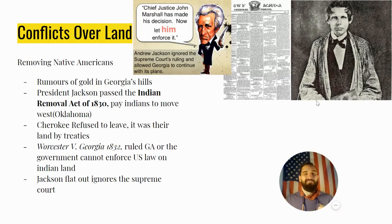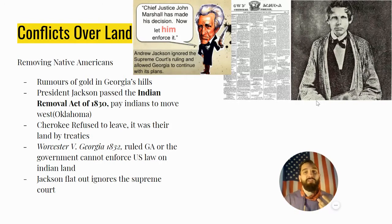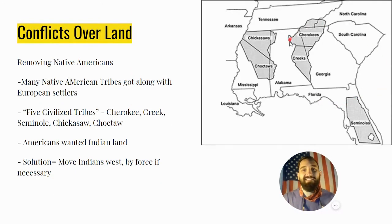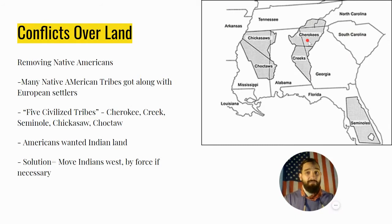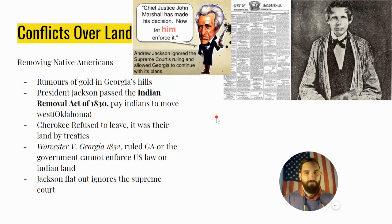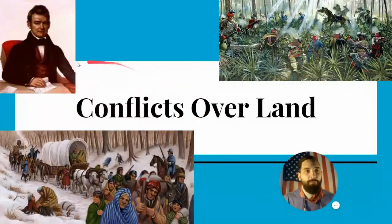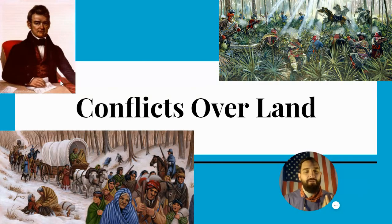The Cherokees refused to leave. Georgia was enforcing the Indian Removal Act on Cherokee land, even though that land was essentially its own country. The Cherokee chief, John Ross, was resisting. He is the leader of the Cherokee — not a white man, but a Cherokee chief.